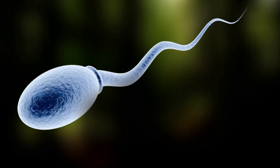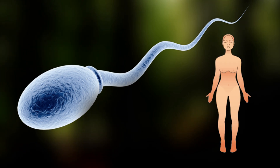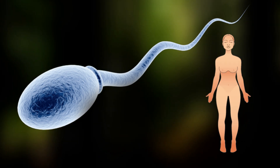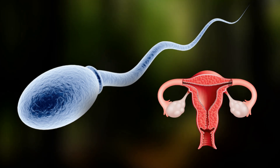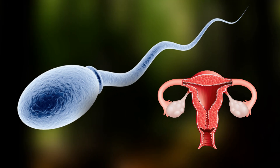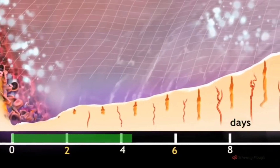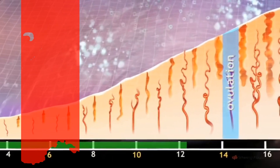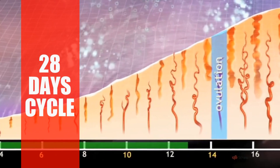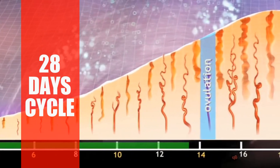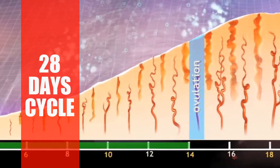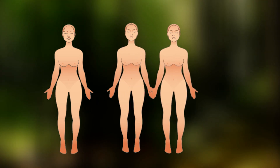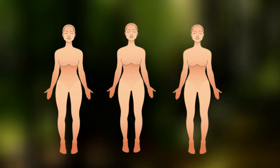Ovulation is a crucial part of the menstrual cycle in females, during which a mature egg is released from one of the ovaries. This event typically occurs midway through the menstrual cycle, roughly around the 14th day of a 28-day cycle, although it can vary from person to person and cycle to cycle.